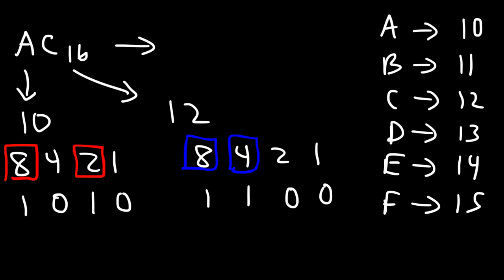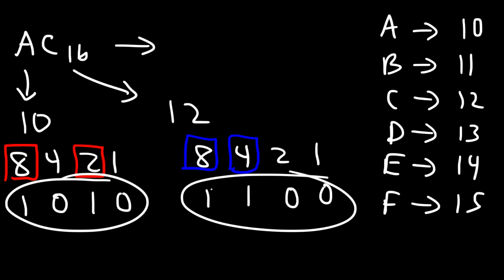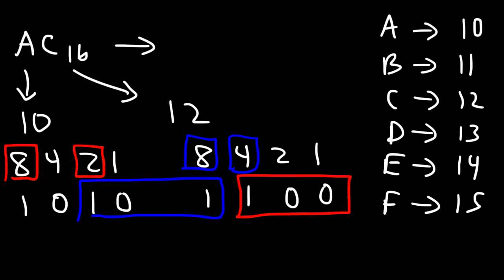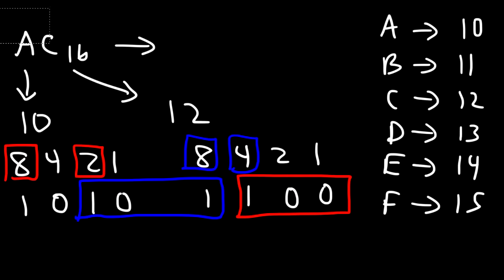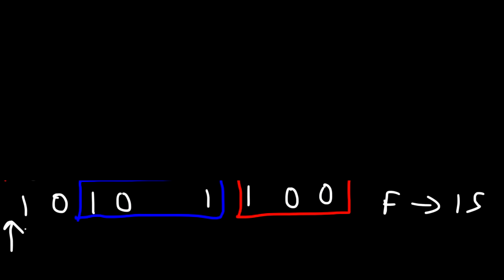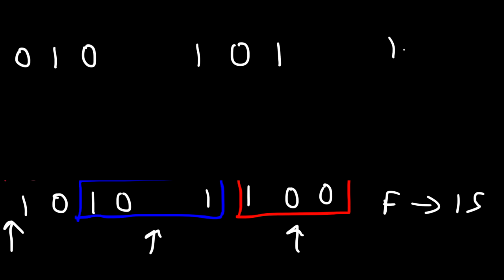The next thing we need to do is regroup the binary numbers. Right now they're represented as groups of 4, but we need to change it to groups of 3. So the first group of 3 is 1, 0, 0 — actually, the first group is 0, 1, 0 and the second group of 3 is 1, 0, 1. And then the last one, we only have two numbers so we're going to add a 0 to it. So in blue I have 1, 0, 1, and in red, 1, 0, 0.